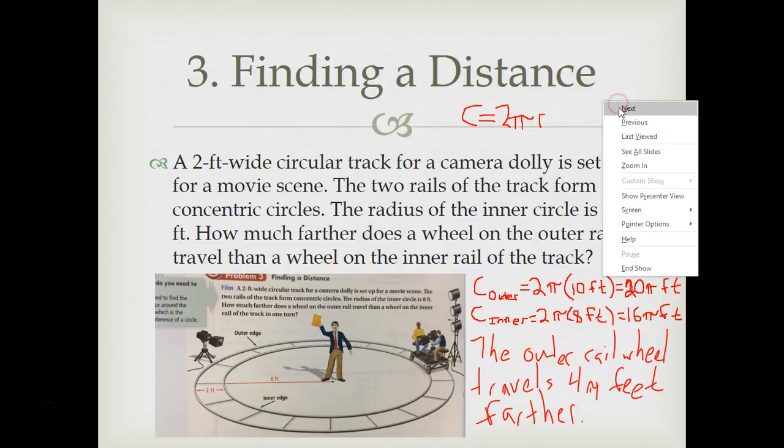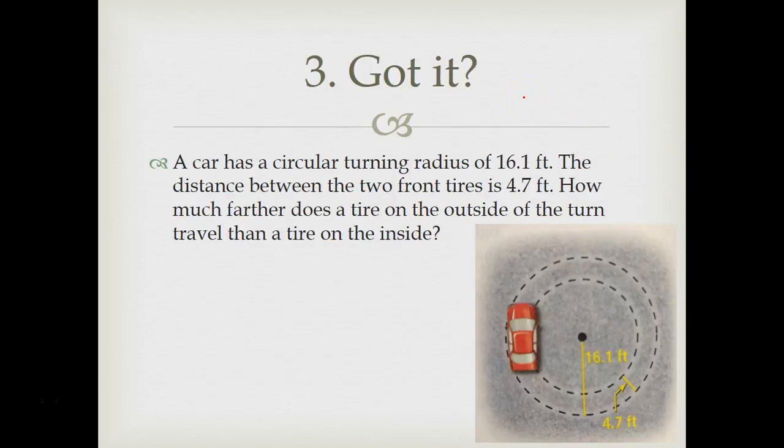Jumping into 'Now you got it.' A car has a circular turning radius of 16.1 feet. The distance between the two front tires is 4.7 feet. How much further does a tire on the outside of the turn travel than a tire on the inside? I'm going to give you a second. Go ahead and pause the video and then when we come back we'll solve the problem. Try it, do what you can and then we'll come back shortly.